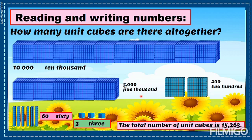The next one is composed of 100 unit cubes. If we have two of them, each composed of 100, then 100 plus 100 equals 200. And this is the word form of 200. The next block shows each unit composed of 10. Let us count by 10s: 10, 20, 30, 40, 50, 60. That is a total of 60 unit cubes.